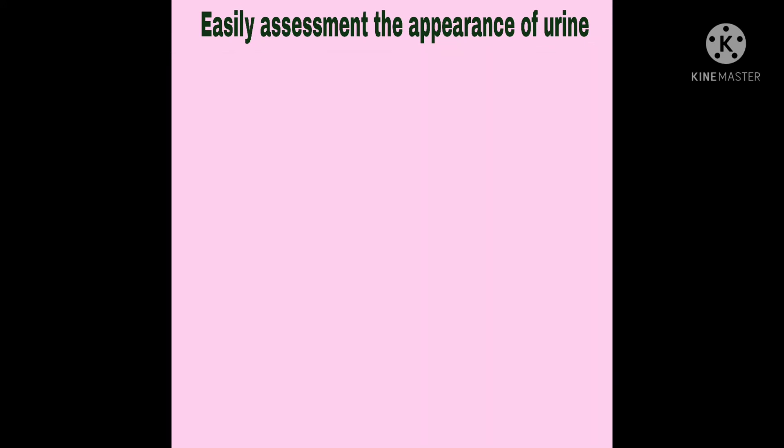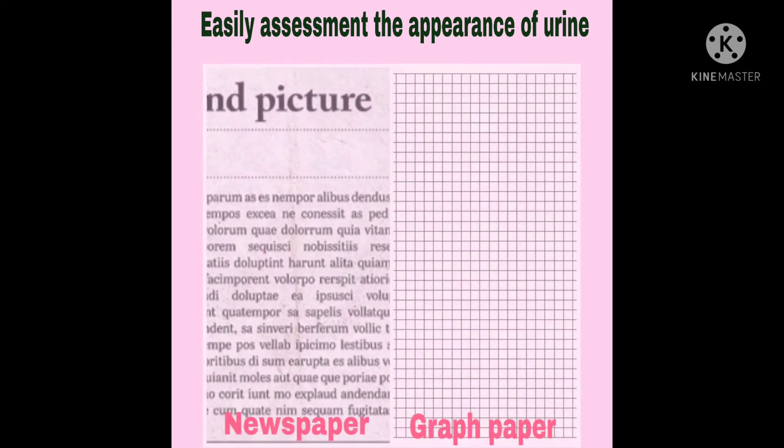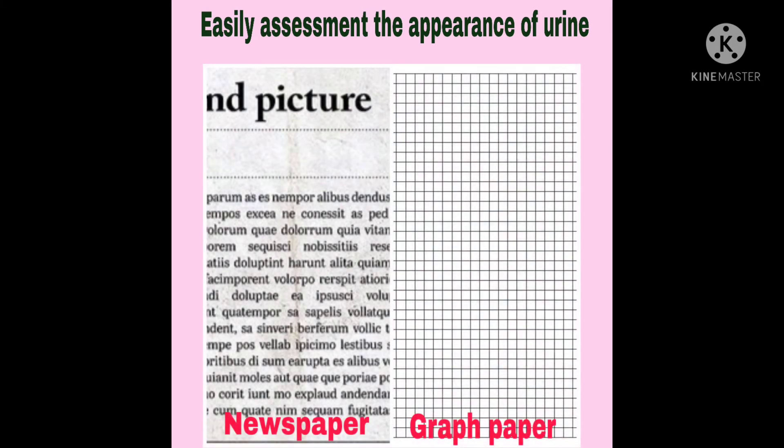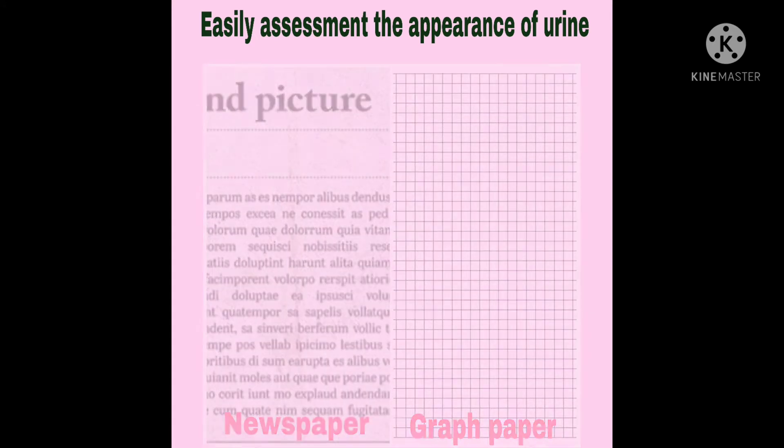To determine the urine appearance you need one thing: a piece of newspaper or a piece of graph paper.